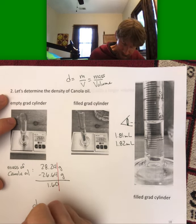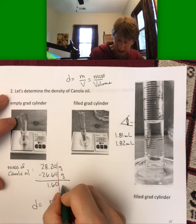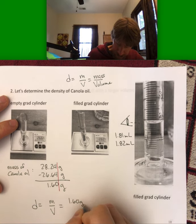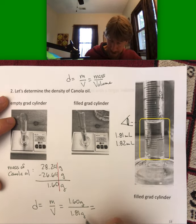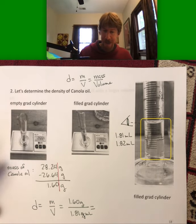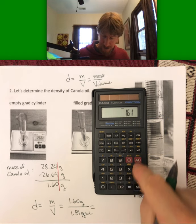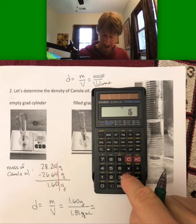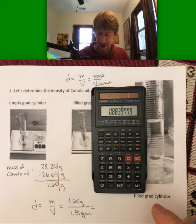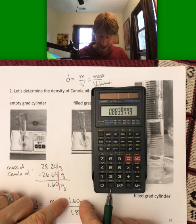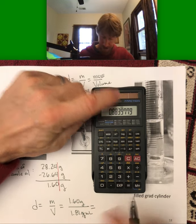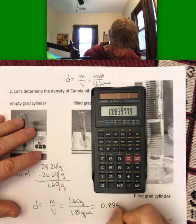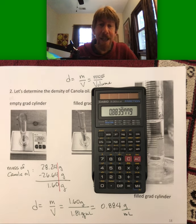So D is going to be mass over volume. It's going to be 1.60 grams over 1.81 milliliters. Doing this math, 1.60 divided by 1.81. For sig figs, I have 3 and 3, so my final answer must have 3 sig figs: 0.884, and none of my units cancel. Density does have units of grams per milliliter, 0.884 grams per milliliter.